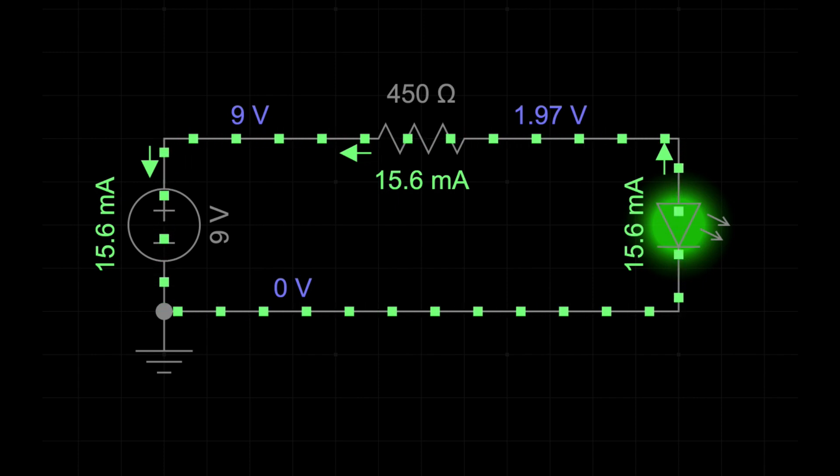When current passes through a resistor, some of the electric potential energy is converted into heat energy due to the resistance. This conversion results in a decrease in the electric potential, or a voltage drop, across the resistor.